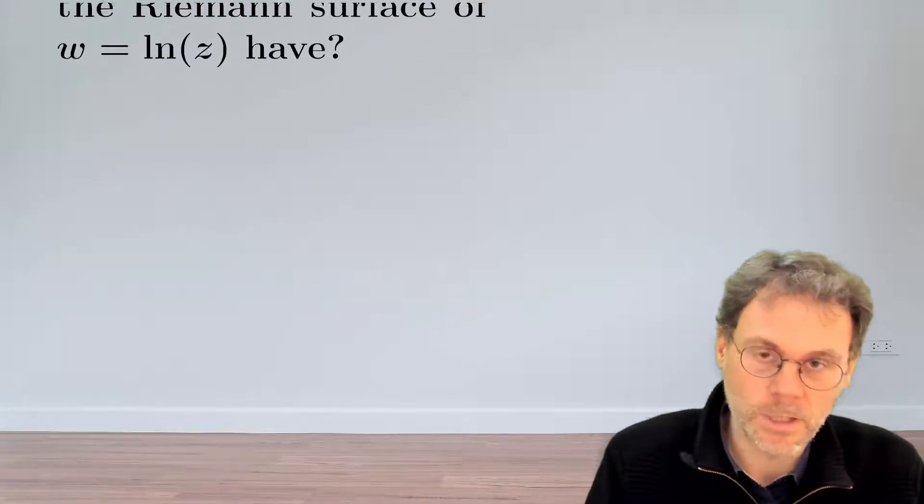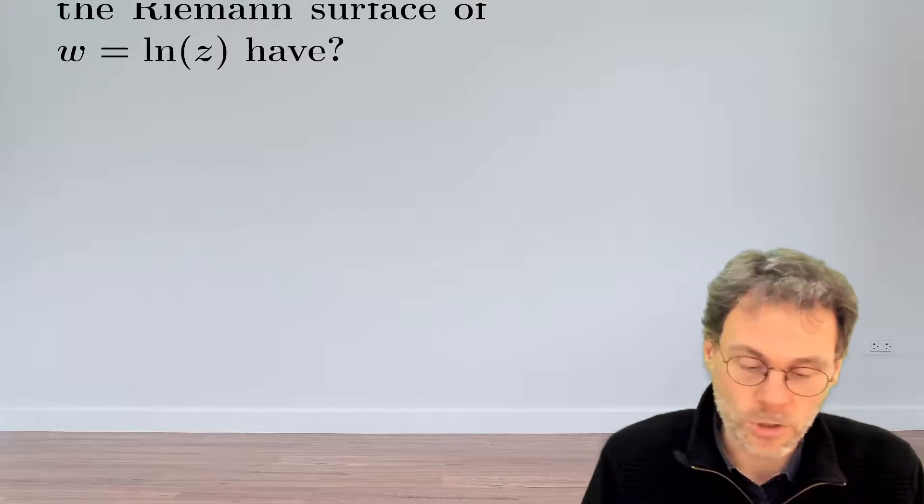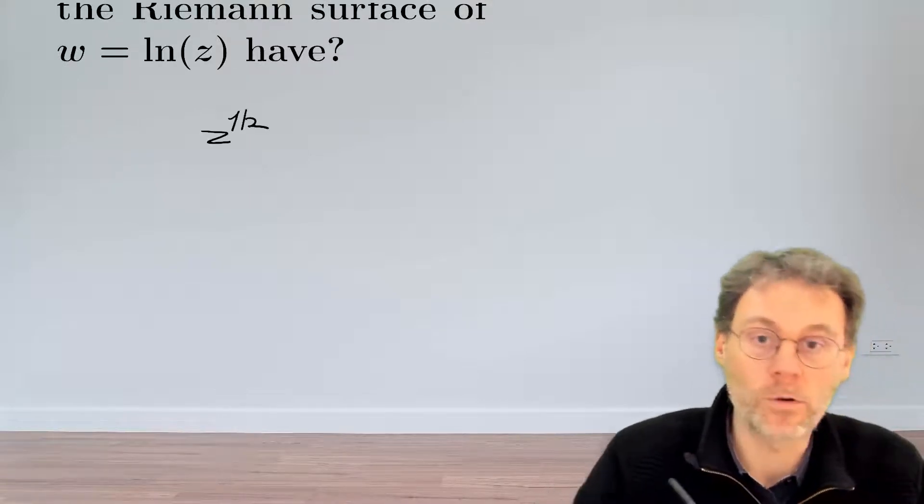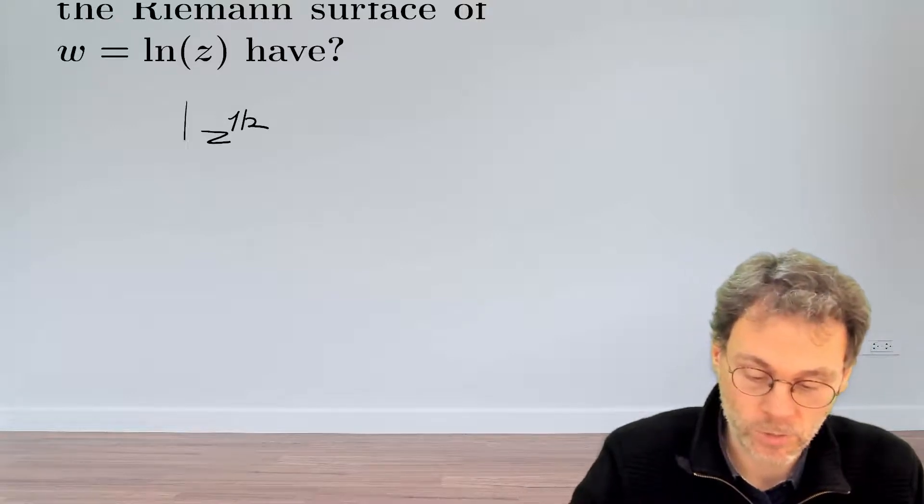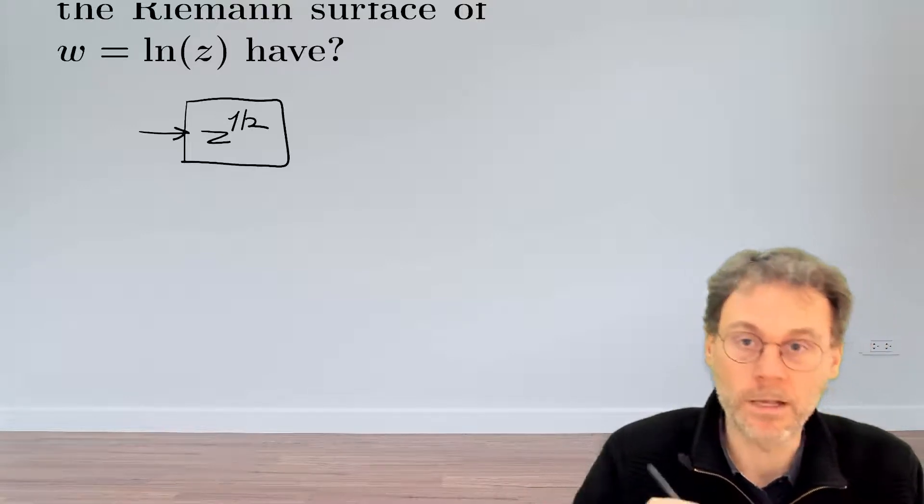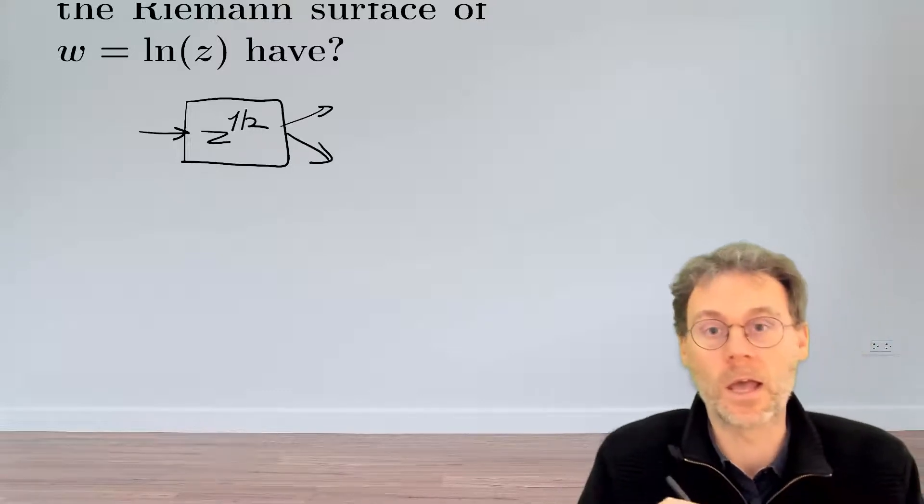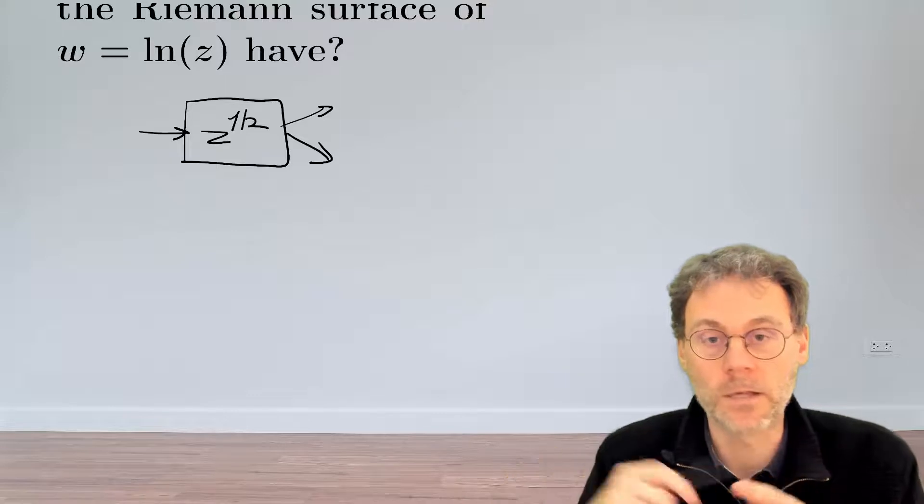For starters, let's look at something slightly more familiar. So if we have the complex function z to the power of 1/2, so the complex square root, you know that if you plug in a single input, there's basically two possible outputs that you can get out of it, and one is minus the other one.